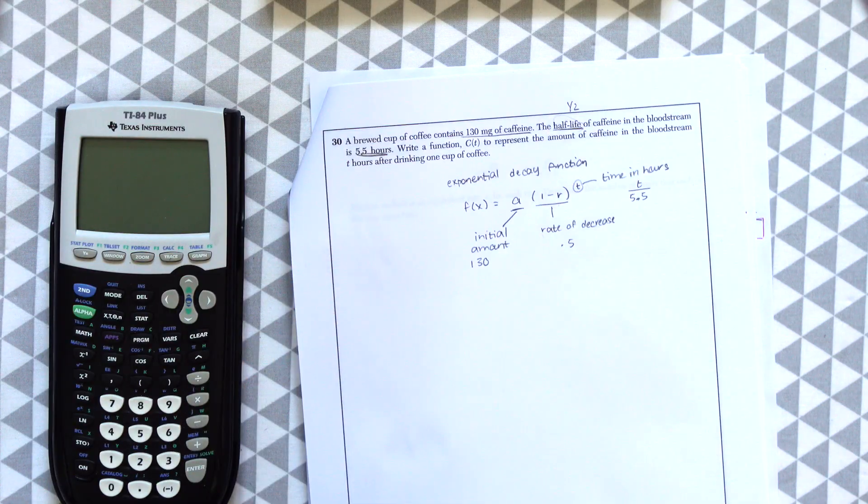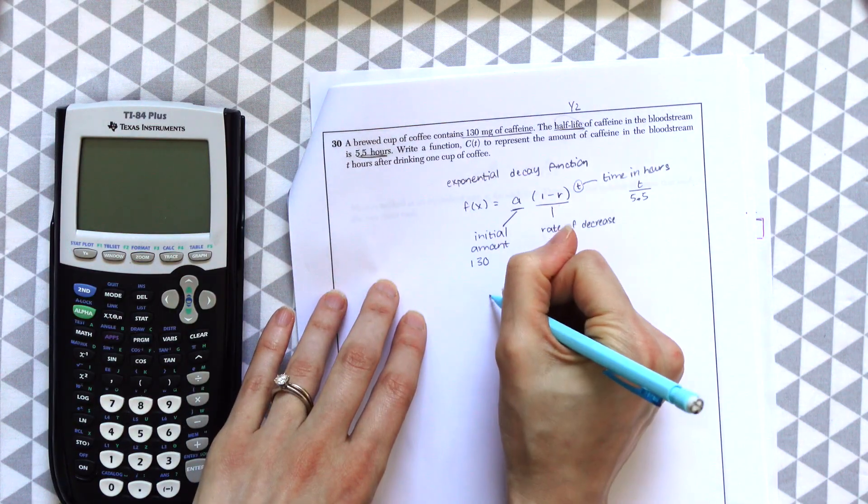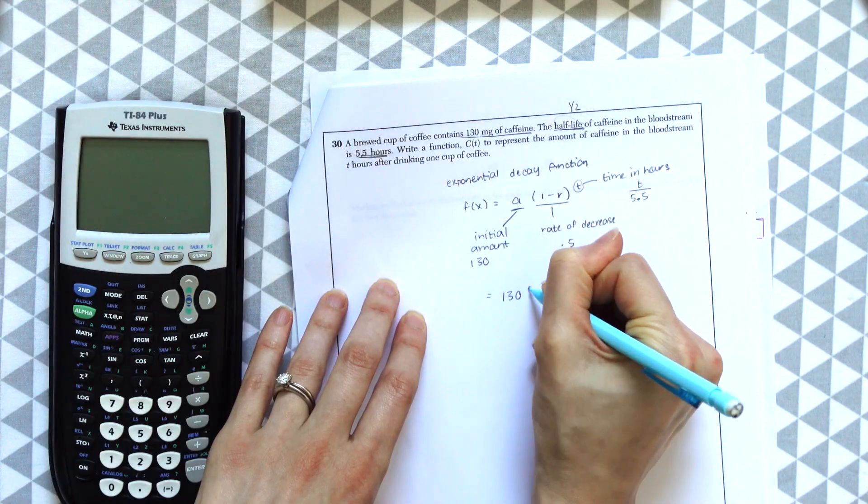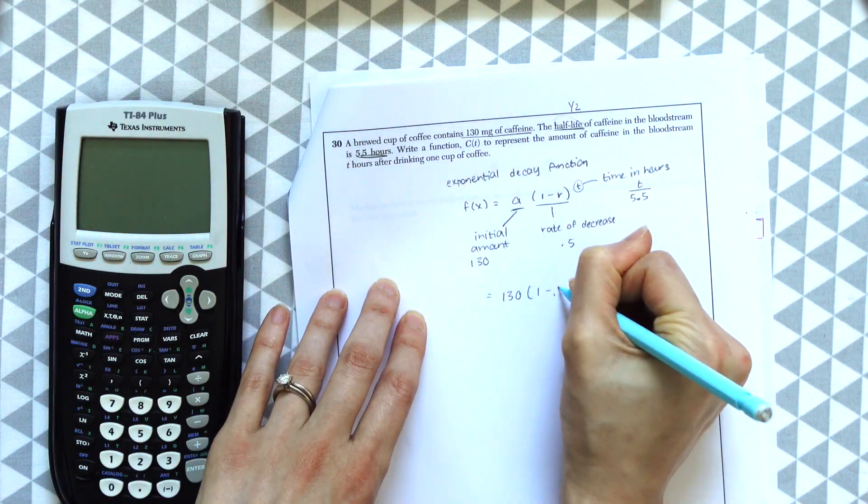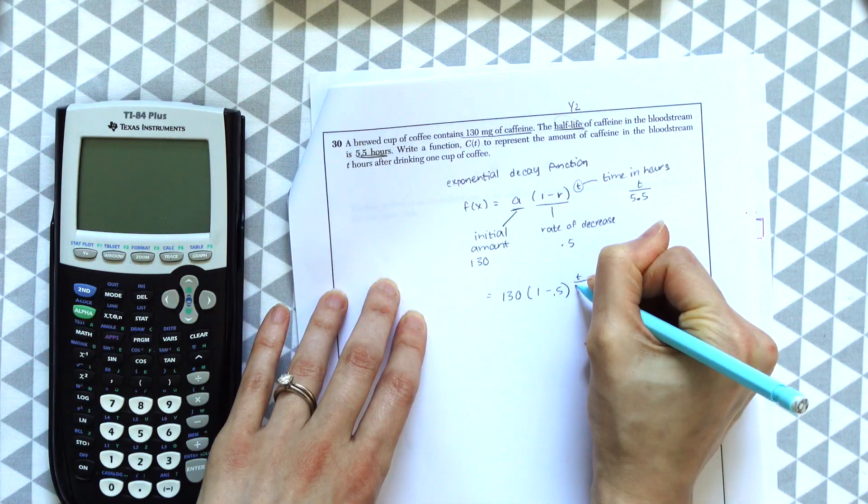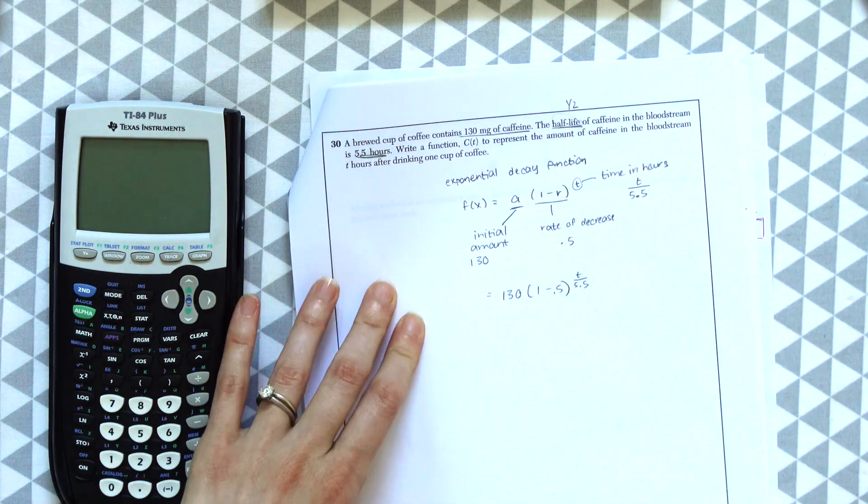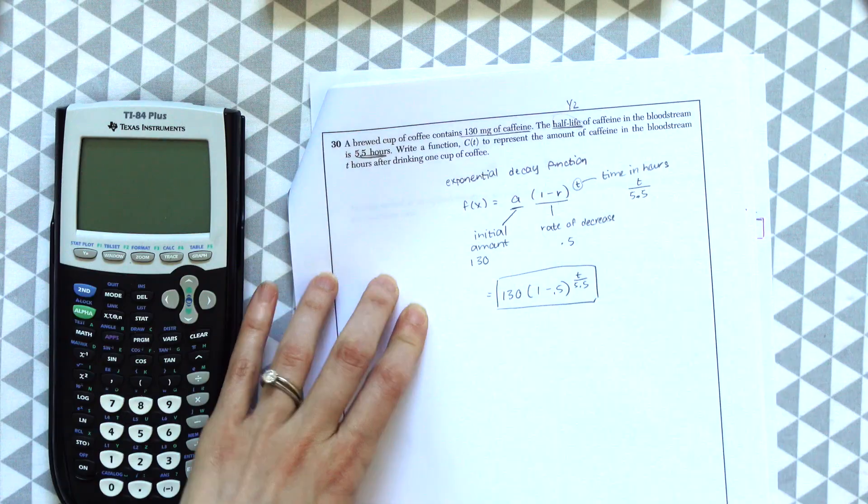So that's like the only little tricky part about this question. Now we can put this all together. We have 130, 1 minus 0.5, and then this is going to be raised to the t over 5.5. And that's our answer.